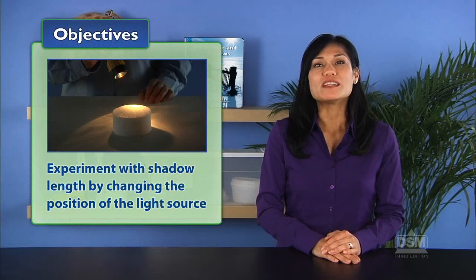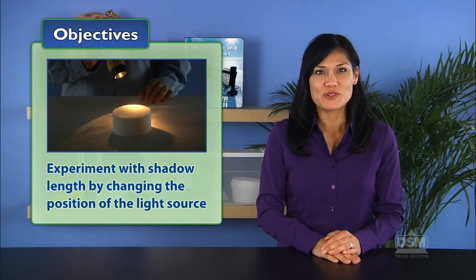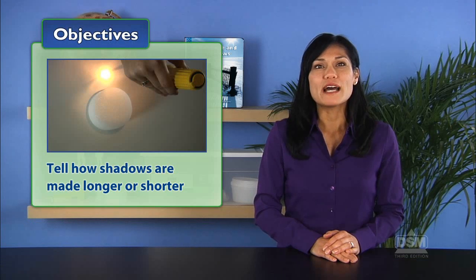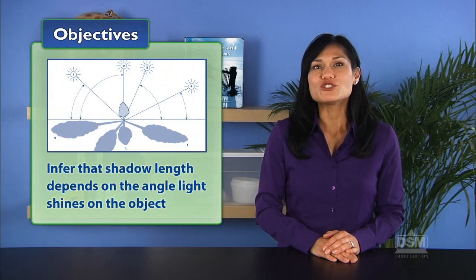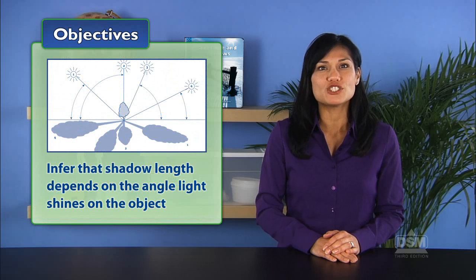In Activity 9, Shadows Long and Short, students experiment with the length of shadows by changing the position of the light source. In doing so, students learn how shadows are made longer or shorter and infer that shadow length depends on the angle at which the light shines on the object.